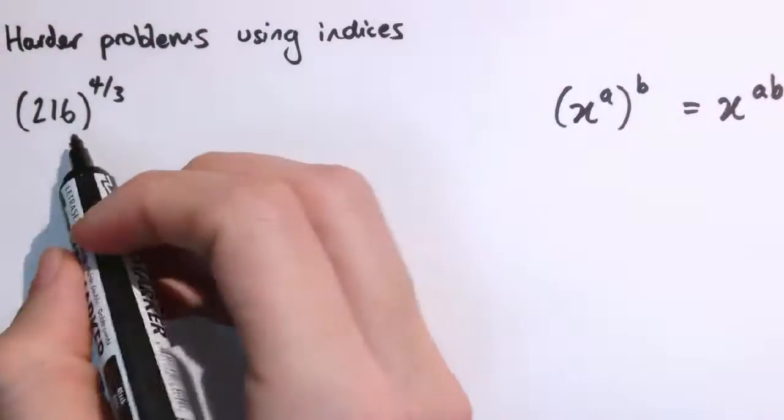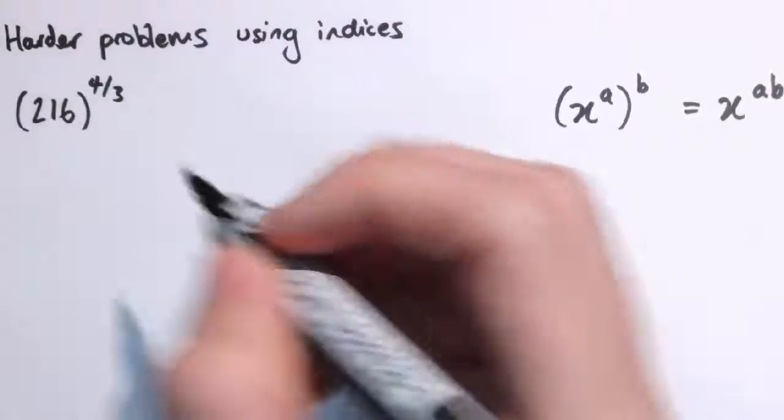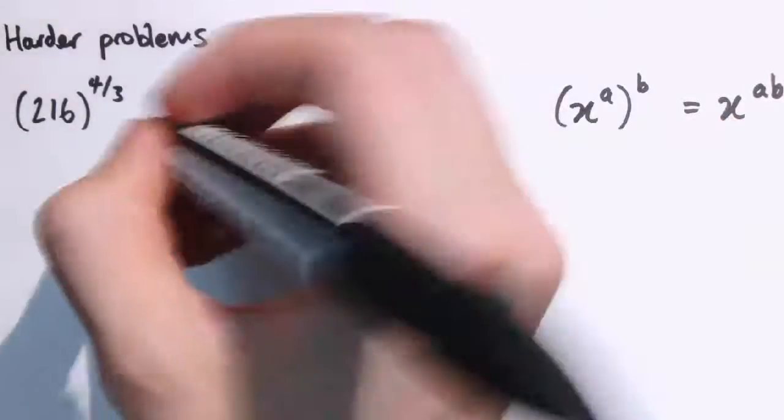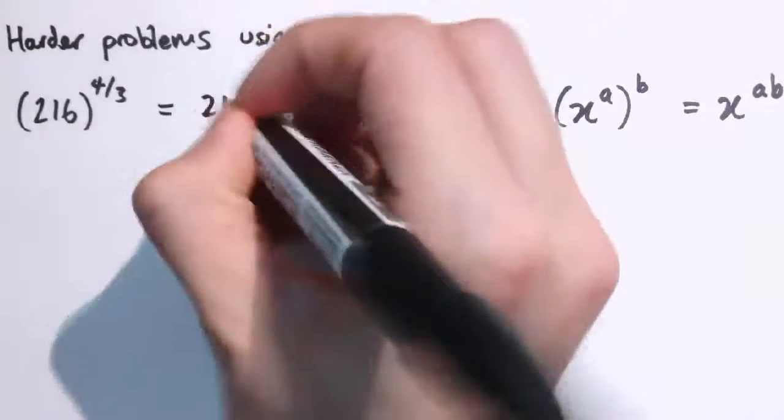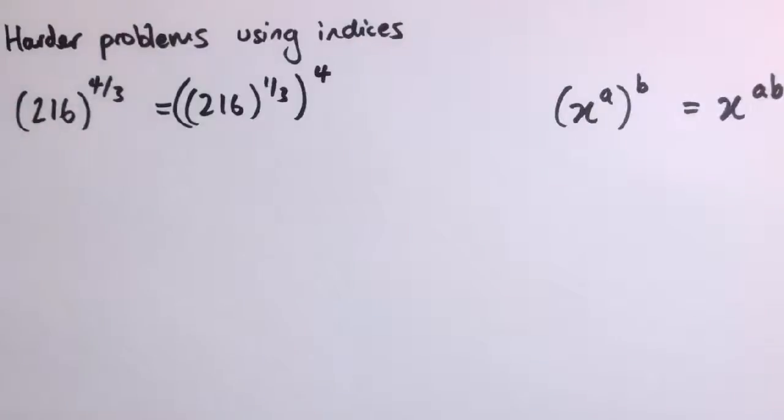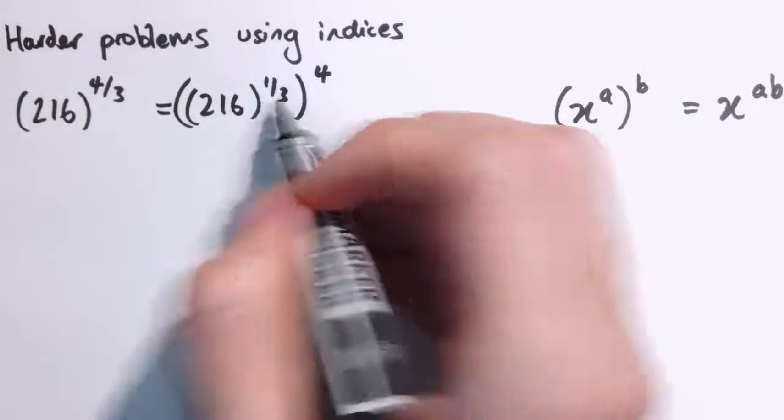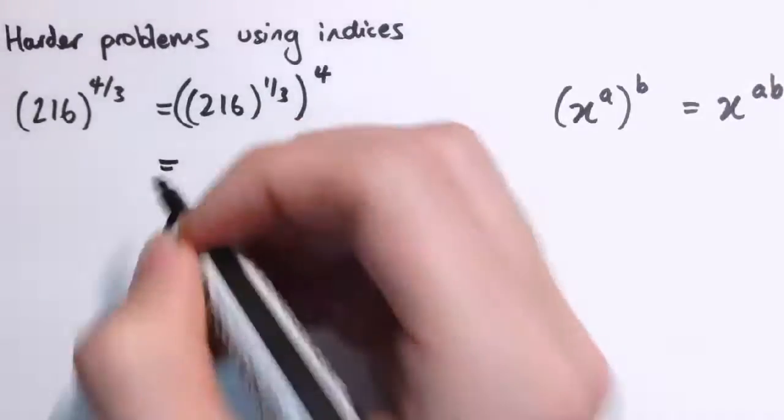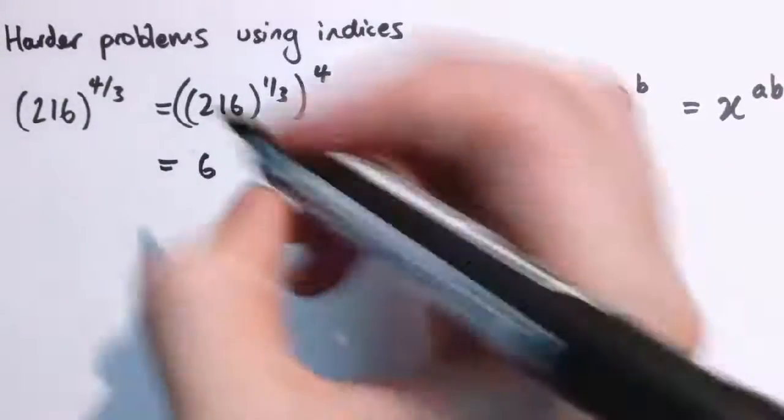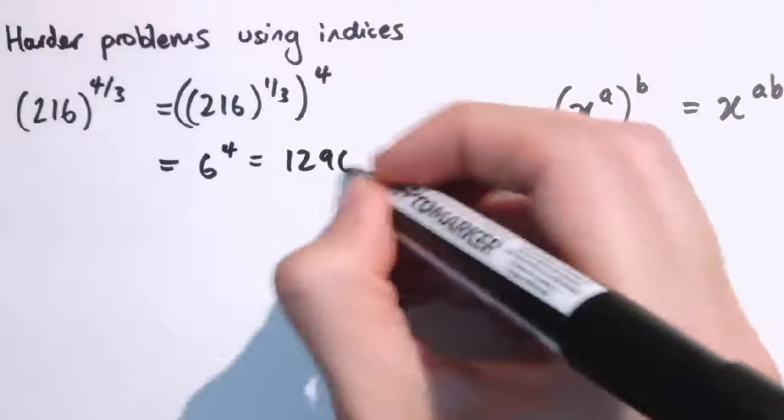So for example, 216 to the 4 thirds. I'm going to split this 4 thirds as 4 times 1 third and say that that's 216 to the 1 third all to the 4. And that helps because the 1 third power is the cube root and the cube root of 216 is 6. So this is 6 to the 4 which is 1296.